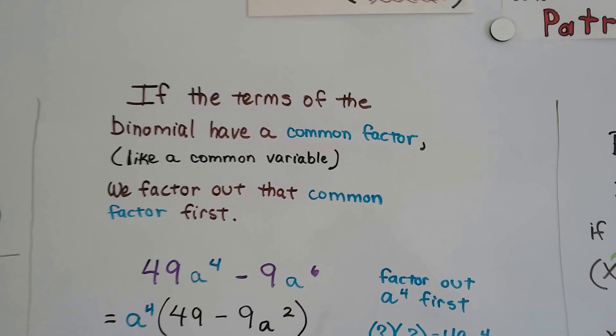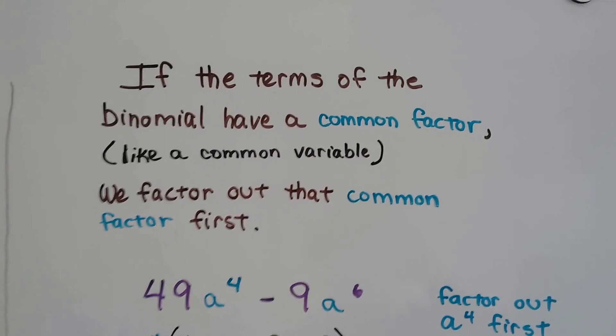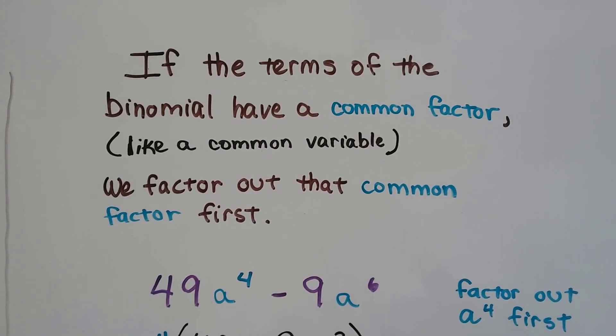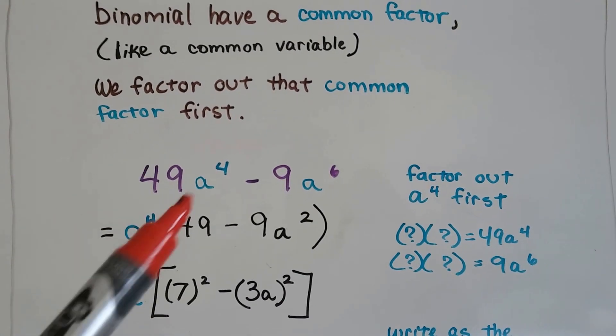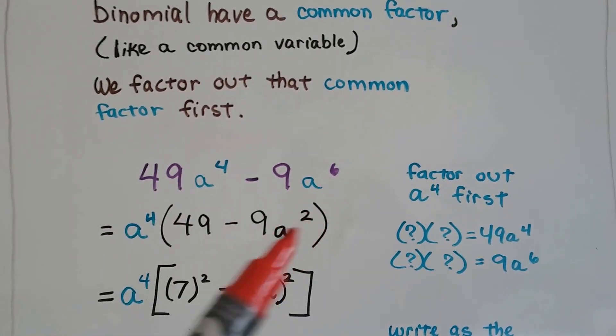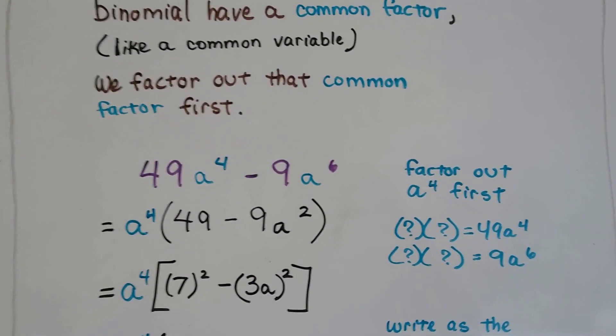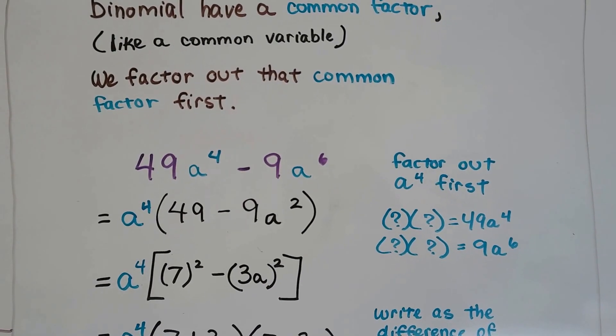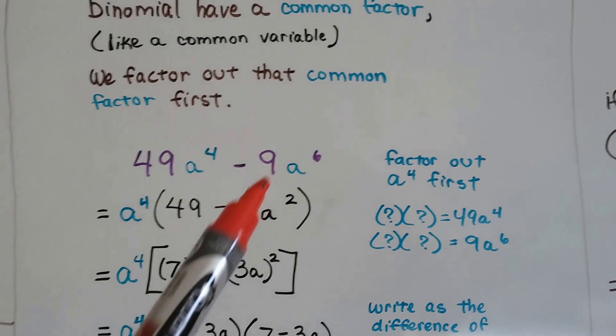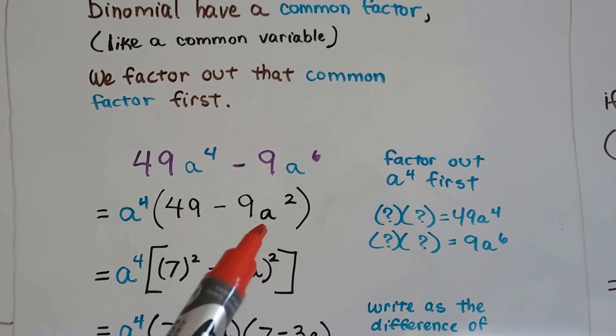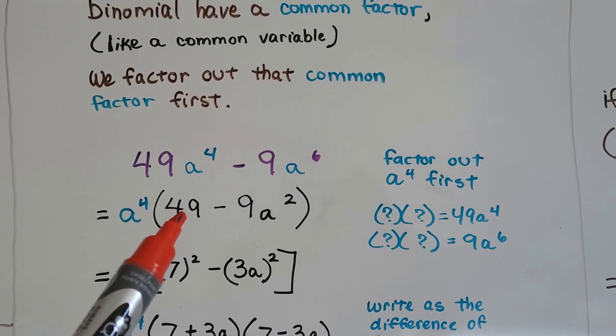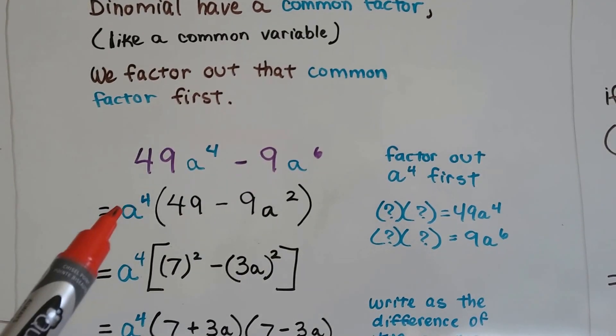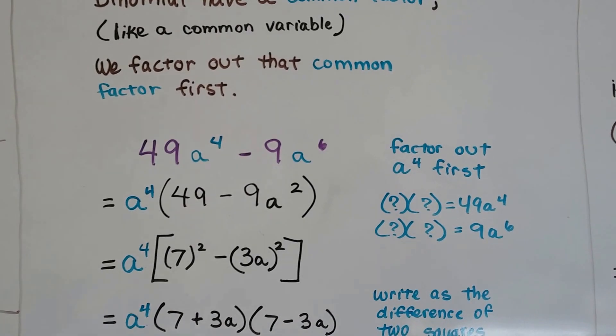If the terms of the binomial have a common factor, like a common variable, we factor out that common factor first. So 49a^4 minus 9a^6, they both have an a. We're going to factor out a^4 first. So that's going to leave him as an a². So now we're going to have 9a² and we're going to have the 49 here.